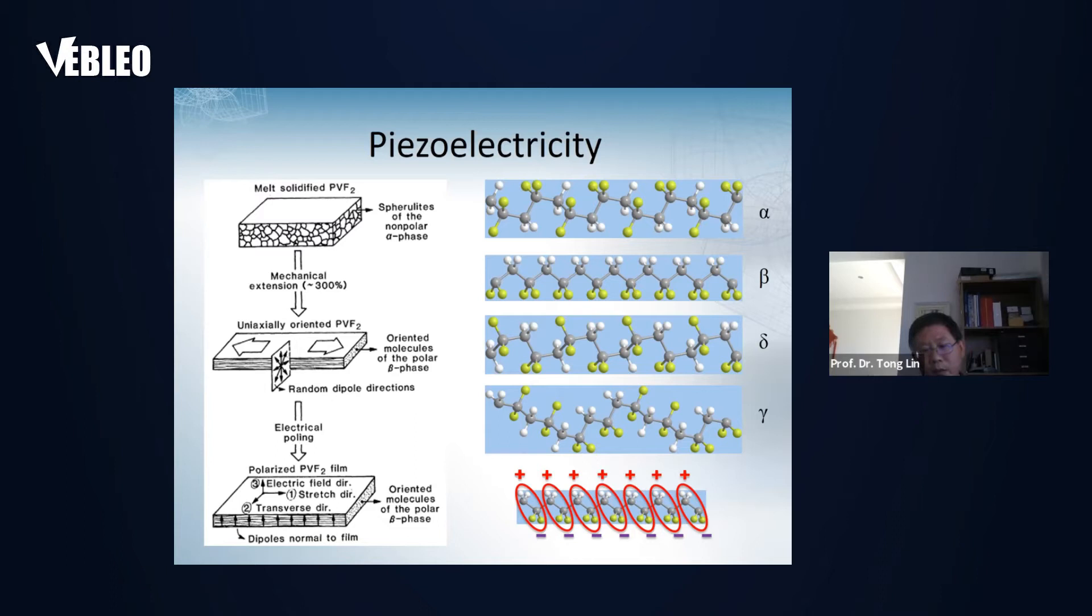That treatment is to convert other crystal phases into beta phase and also make the dipole orientated in a single direction. However, for electrospinning, this technology doesn't need this complicated process. Just one step from solution to the solid state includes a high ratio of stretching and poling treatment in the high-voltage electrical field, which is very simple and efficient. The nanofiber might also have higher piezoelectricity than a dense film.